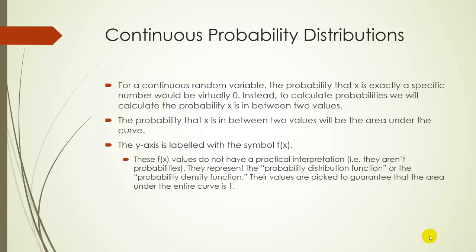To represent this, we can draw a curve — like a histogram, but smoothed out a little. The probability that x is between two numbers is just the area under that curve, the area of the shaded region. Our graph has an x and y axis. The x axis is our x values. The y axis uses the symbol f(x). Note that these f(x) values don't have a very good practical interpretation — they're not probabilities, even though they act kind of similar. They represent the probability density function.